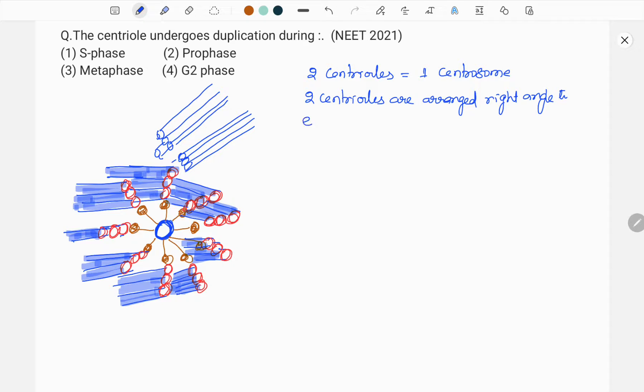They are perpendicular to each other and centrioles are a-membranus. They are not bound by any membrane. A-membranus cell organelles.